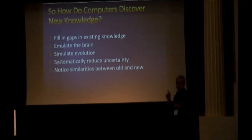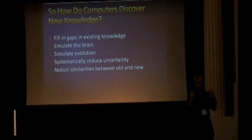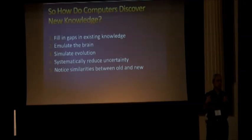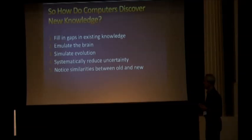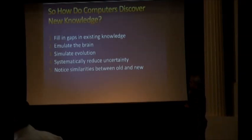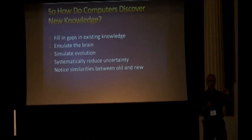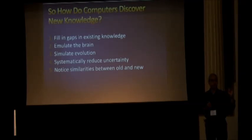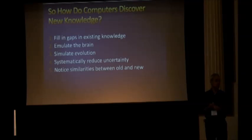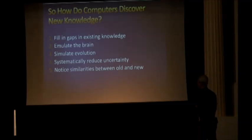Another way is to say the best learning machine out there is your brain, so let's reverse engineer it — emulate the brain on the computer and learn that way. The third one is to say there's something even better than that: evolution. Because evolution not only made the brain, it made the rest of you and everything else. So that must be a pretty good learning algorithm — let's see if we can emulate that on the computer.